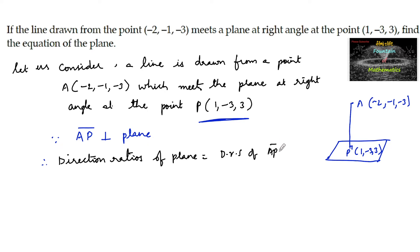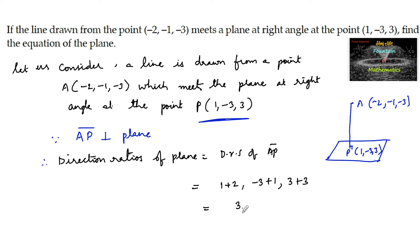Since line AP is perpendicular to the plane, the direction ratios of the plane can be taken as the direction ratios of line AP, joining two points: (x2 - x1, y2 - y1, z2 - z1). So we get (1 - (-2), -3 - (-1), 3 - (-3)), which gives us 3, -2, and 6. Therefore, direction ratios of the plane are (3, -2, 6).